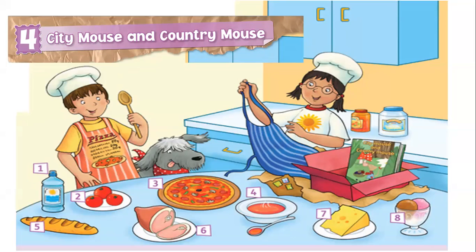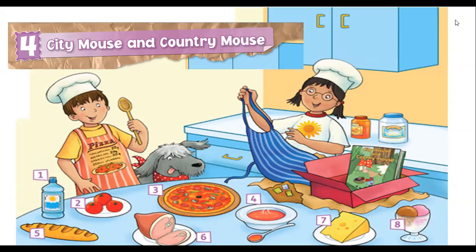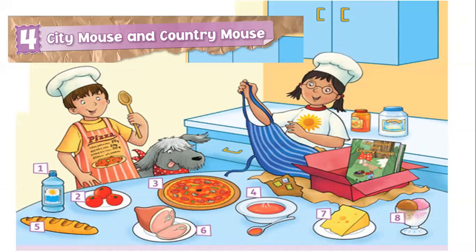Here we have the title of unit number four: The City Mouse and Country Mouse. Here we have two children — a boy and a girl — and also we can see a dog. They are cooking, preparing something delicious. And here we have different food and drinks: number one, water; number two, tomatoes; number three, pizza; number four, tomato soup; number five, bread; number six, ham; number seven, cheese; number eight, an ice cream.